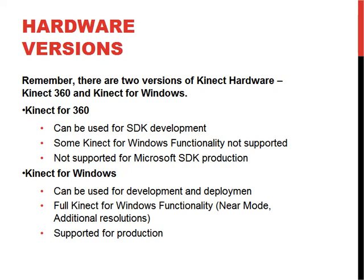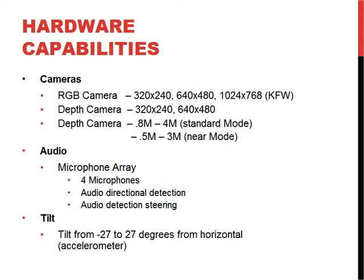Kinect for Windows is the current version built for writing applications on a PC — fully used for development and deployment with full functionality. You get near mode, additional resolutions, and some updates. You also get a shorter cable and a small dongle that helps with USB transients on a PC that they don't see on the Xbox. There are significant differences between the two, and the SDK is really built for the Kinect for Windows. If you compile your application for production — a kiosk, anywhere users will interact with it — and you don't have Kinect for Windows, it's going to throw you an error.